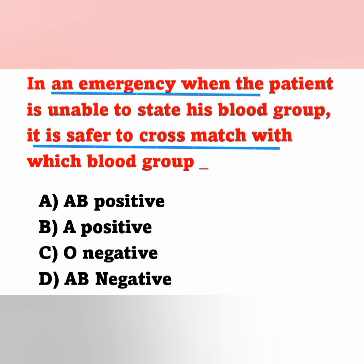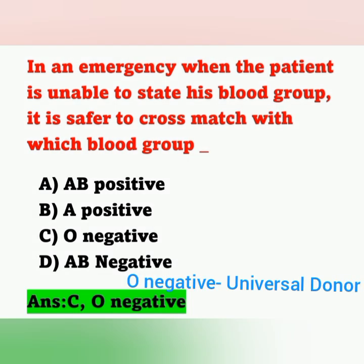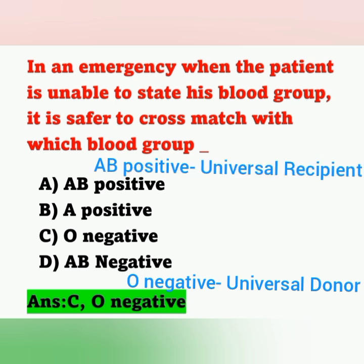Question 9: In an emergency when a patient is unable to state his blood group, it is safer to cross-match with which blood group? Options: A) B positive, B) A positive, C) O negative, D) AB negative. The correct answer is option C — O negative is the universal donor and can be used safely in emergencies. AB positive is the universal recipient.